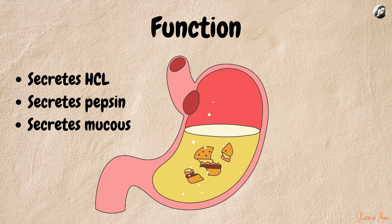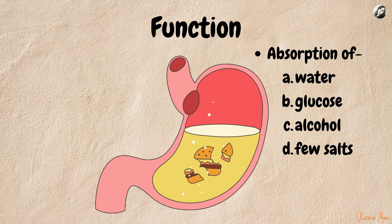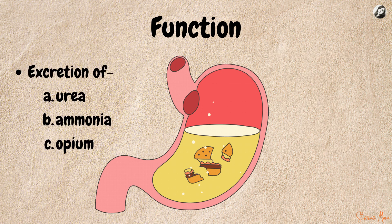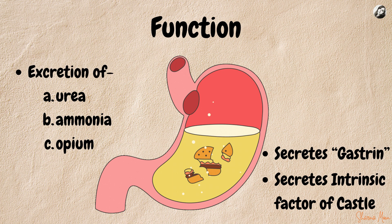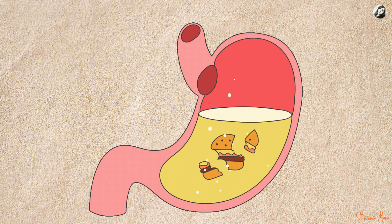The stomach also secretes abundant mucus, which protects the gastric mucosal cells from the hydrochloric acid. In addition to the digestion of carbohydrates, proteins, and fats, the stomach also allows some absorption of water, glucose, alcohol, and a few salts. Waste products of blood such as urea, ammonia, and opium in case of poisoning are also excreted by the gastric mucosa. The stomach also secretes a hormone called gastrin, which regulates the secretion of hydrochloric acid and pepsin. Parietal cells of the stomach also secrete the intrinsic factor of Castle, which helps in the absorption of vitamin B12 by the small intestine.